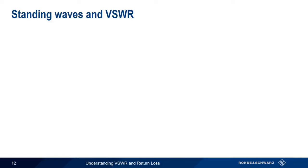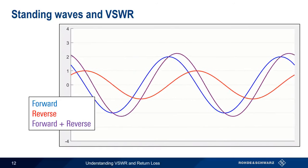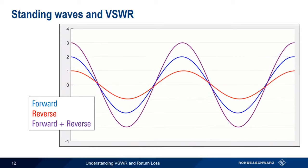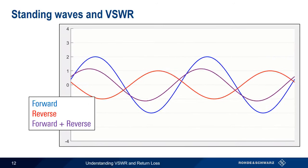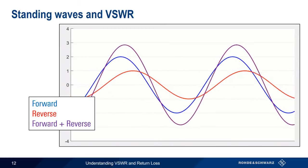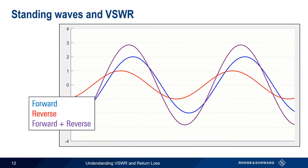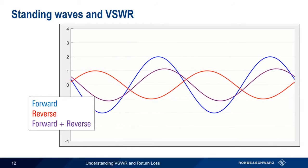The other quantity used to quantify the level of reflected power relative to the level of forward power is VSWR, or Voltage Standing Wave Ratio. Here, the blue trace is the forward wave voltage, the red trace is the reflected wave voltage, and the purple trace is the combined voltage on the line. Note that the amplitudes of the forward and reverse voltage remain constant, but the amplitude of the combined voltage trace rises and falls over time, creating what's referred to as a standing wave.